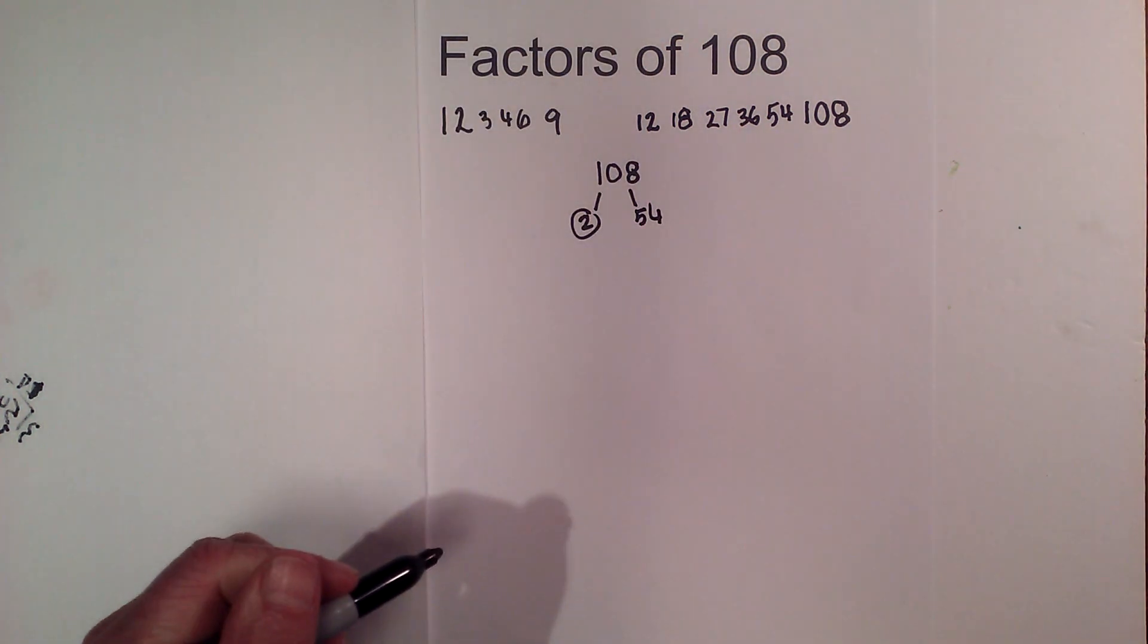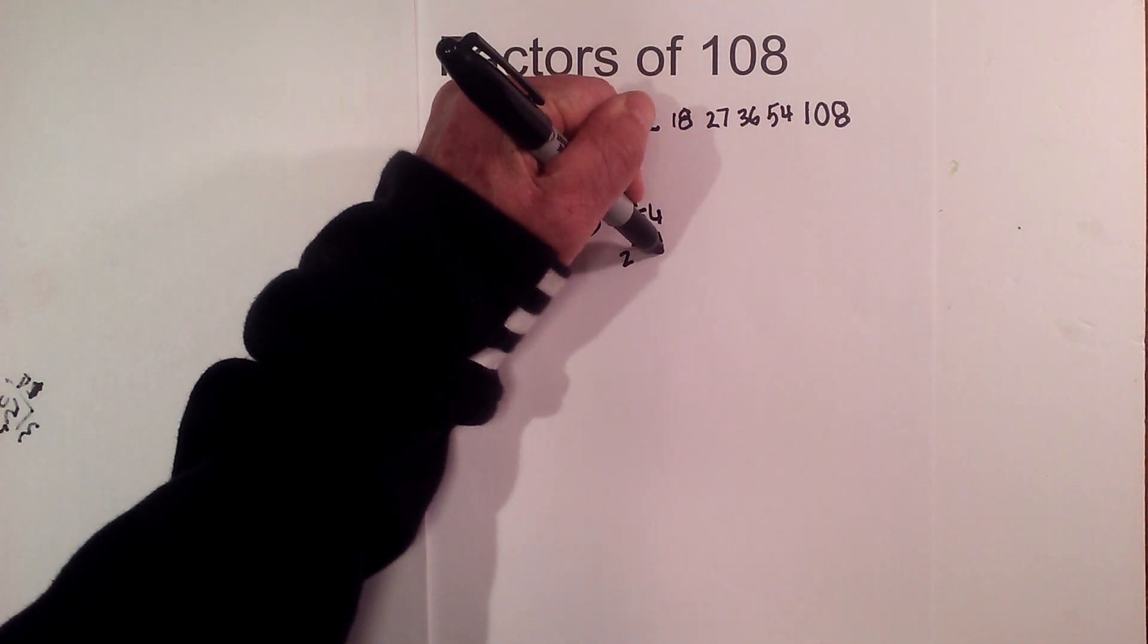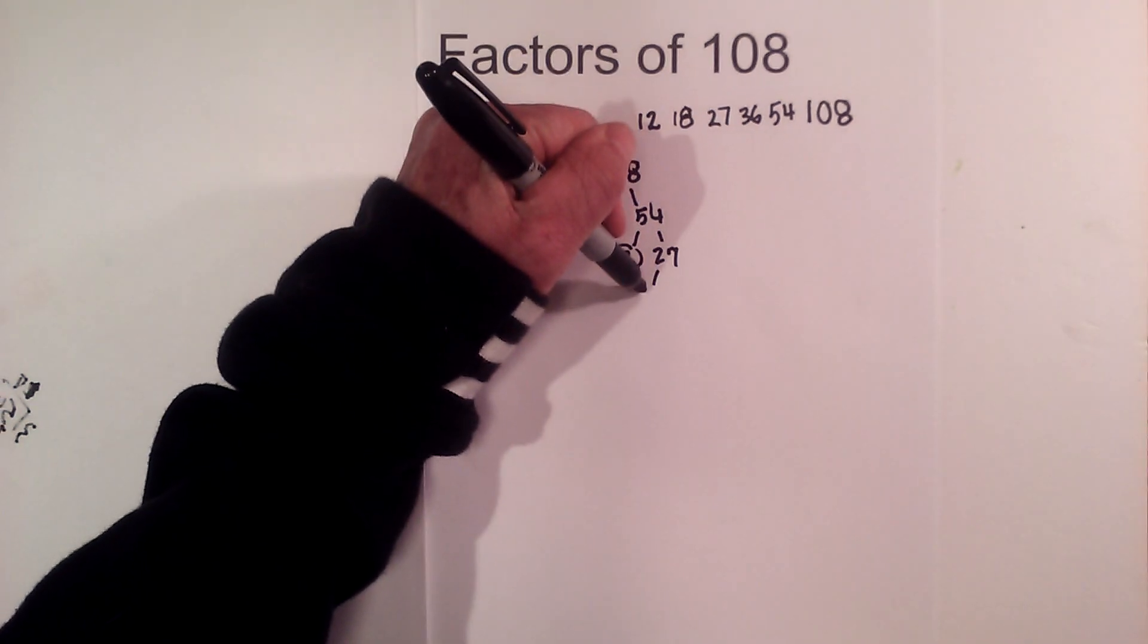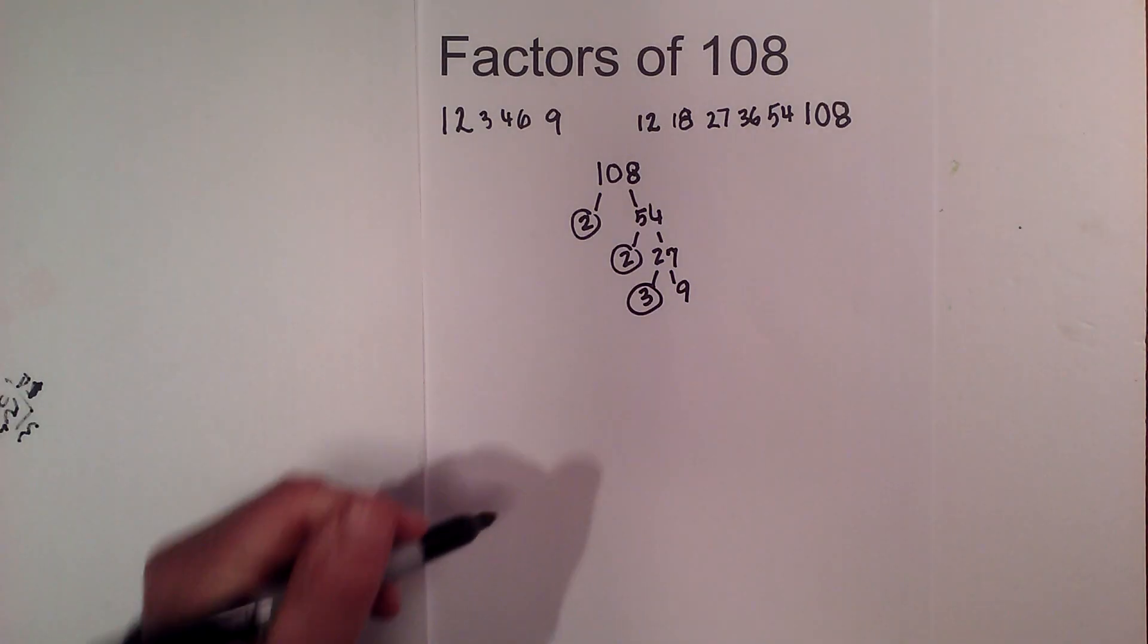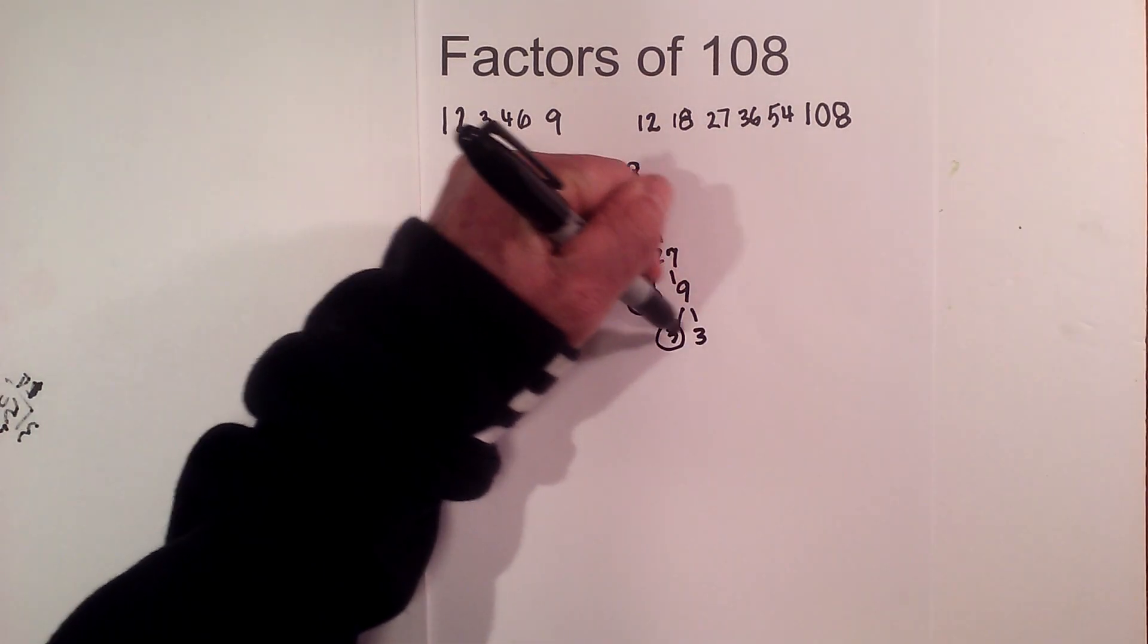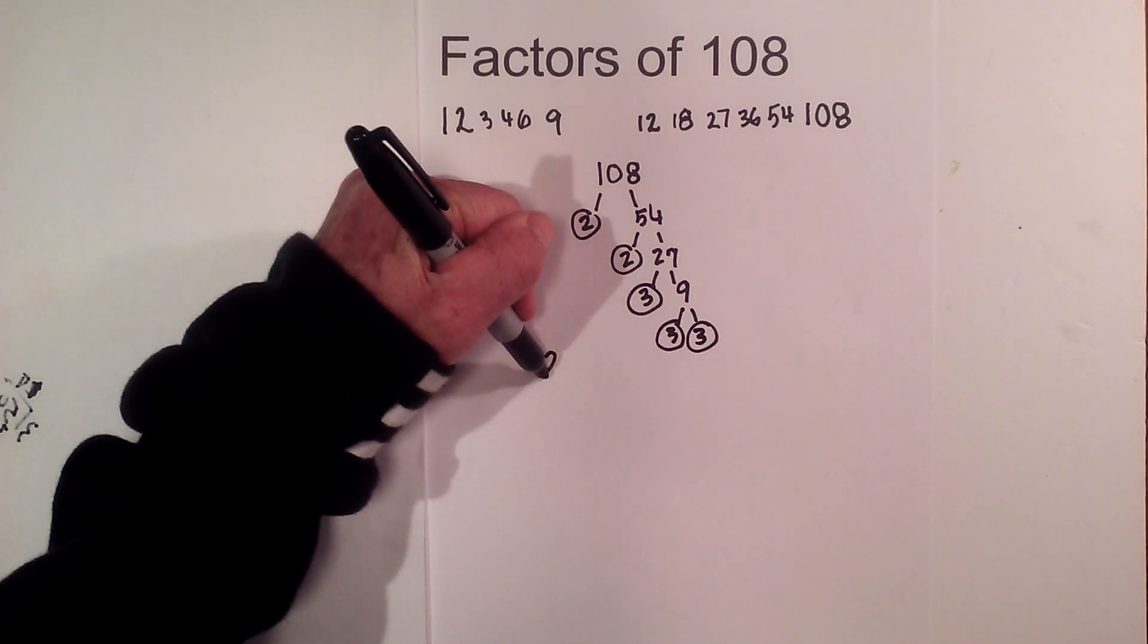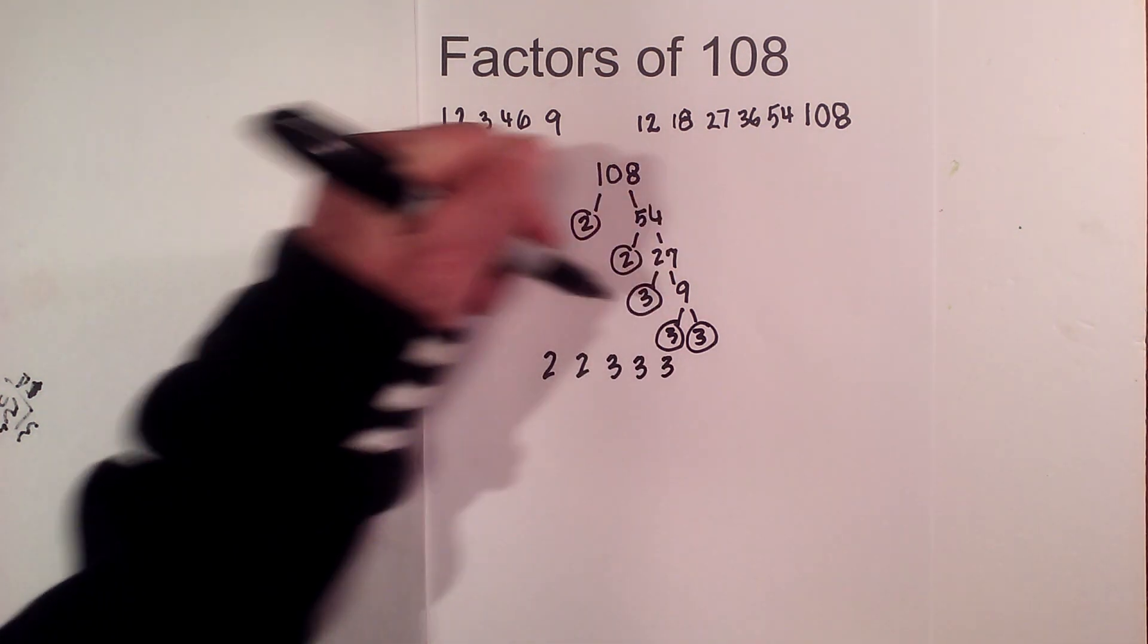Circle the 2 because it is prime. I'll stay with 2. 2 times 27 is 54. Circle the 2 because it is prime. And now 3 times 3 equals 9. Circle both of these because they are prime. So the prime factors are 2 times 2 times 3 times 3 times 3.